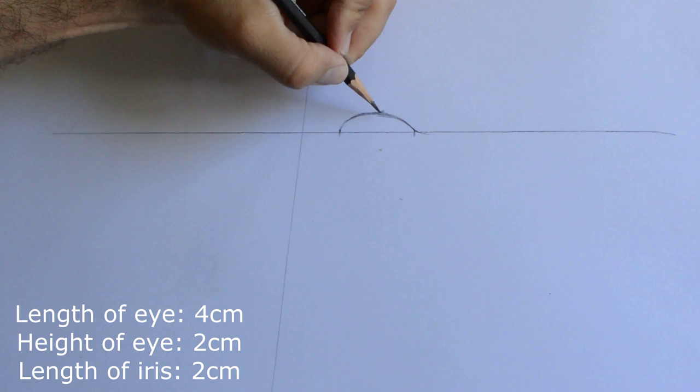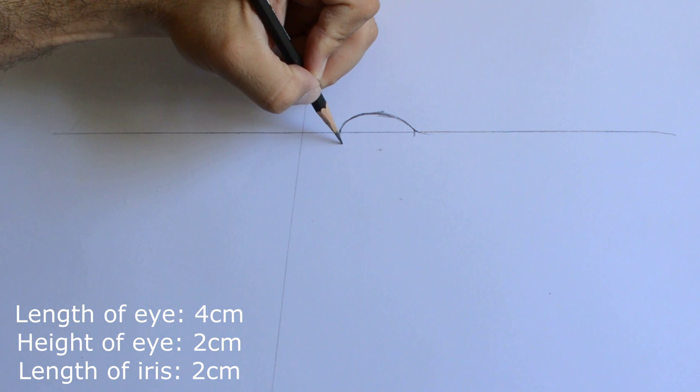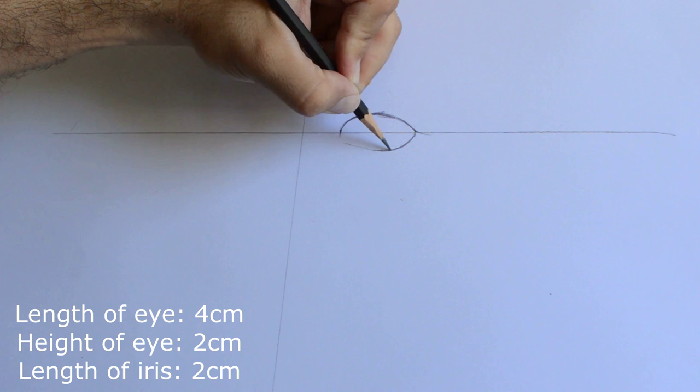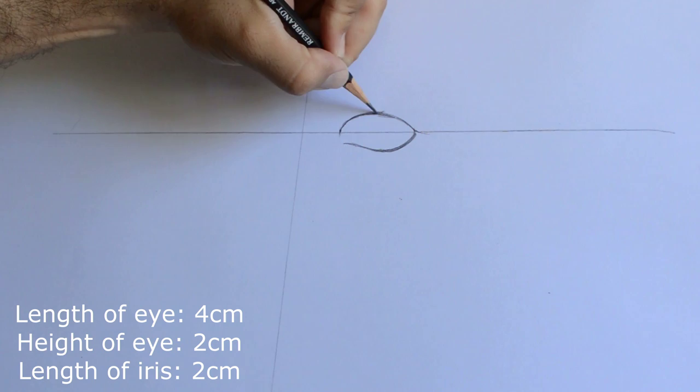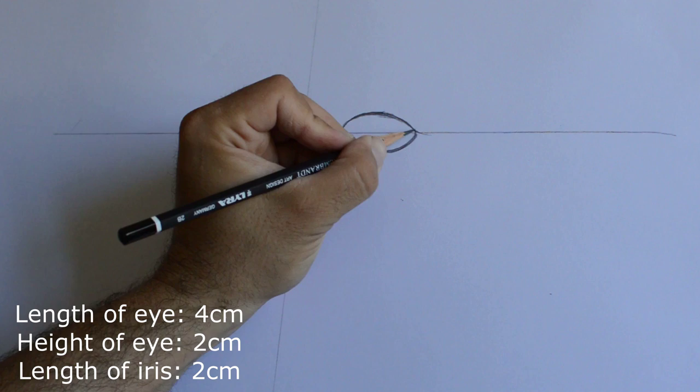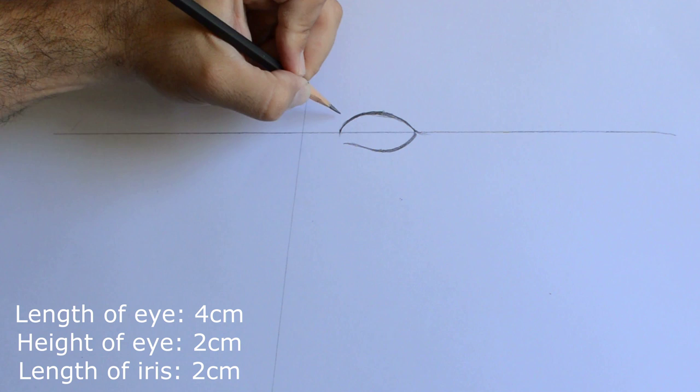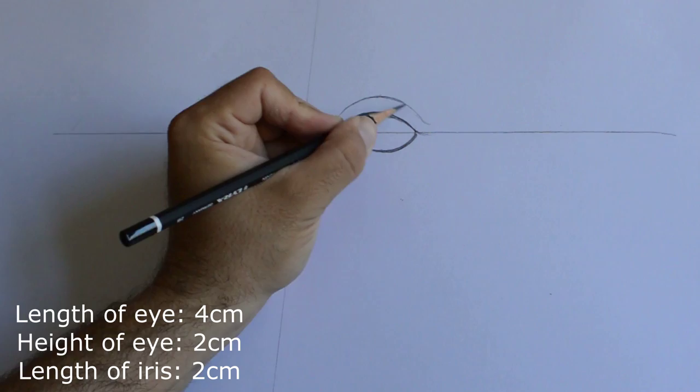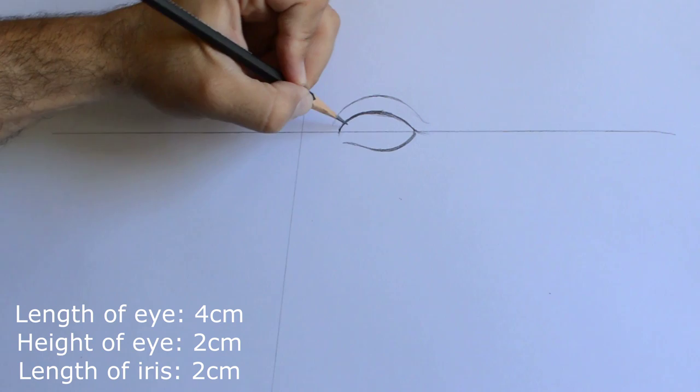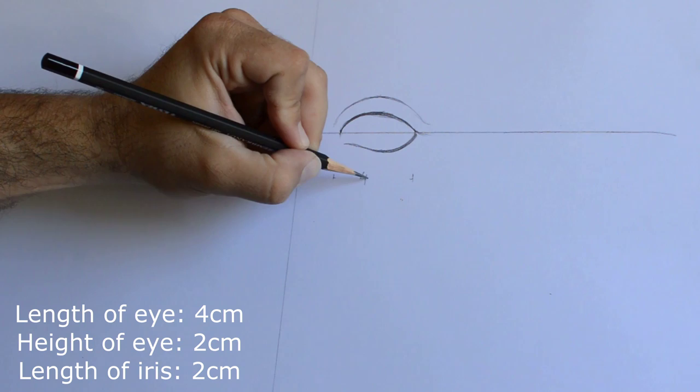So when we draw an eye, the width of the eye should be half of its length. As you see here, the eye that I'm drawing right now is four centimeters in length and two centimeters in height. I pay attention to make the line thicker in the middle of the upper lid. So one centimeter above the eyelid I make my second eyelid.